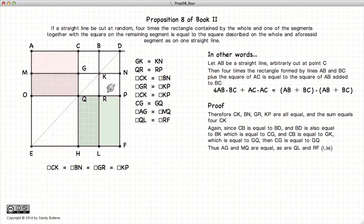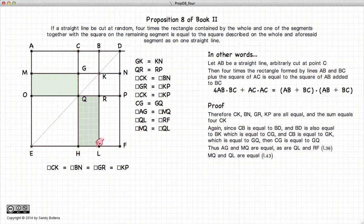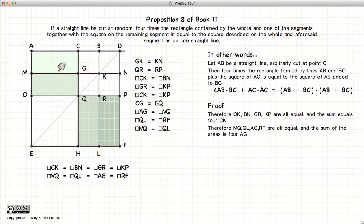So given all these equalities, again, since CG is equal to GQ, and they are two rectangles formed on the same parallel lines with equal bases, then AG is equal to MQ, and similarly QL is equal to RF. But again, MQ and QL are complements of a rectangle, and hence are also equal. So thus we've proven that this is equal to this, which is equal to this, which is equal to that, or in other words, these four rectangles are equal.